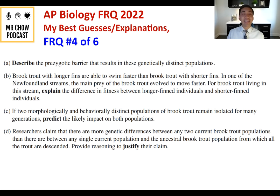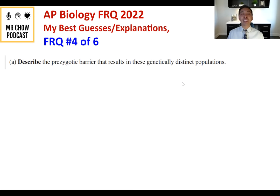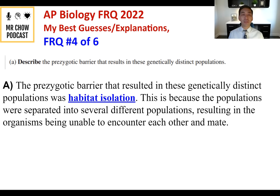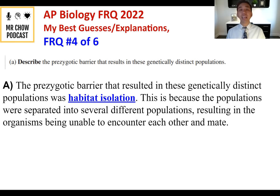Question 4A: Describe the prezygotic barrier that resulted in these genetically distinct populations. The prezygotic barrier was habitat isolation. The populations were separated into several different habitats, resulting in organisms being unable to encounter each other and mate. Since they're in different habitats and never meet, this prevents the two populations from interbreeding.